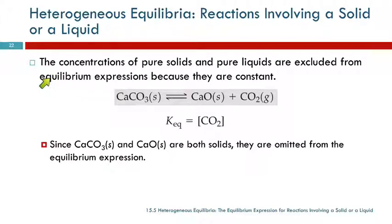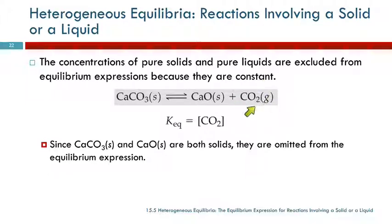We exclude the concentrations of pure solids and liquids from the equilibrium expression because the concentration of a solid or a liquid can't change. The concentration of calcium oxide doesn't change — you either have some calcium oxide present or you don't, but you don't have a varying concentration. We leave that out and then we've got the concentration of the gas. A concentration of gas can change because you can compress the gas or you can expand the gas, so the number of particles in a given volume can change. You can't do that with a solid or with a pure liquid.